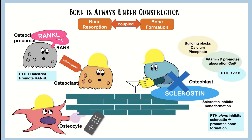PTH can also - when there's enough of it around and the goal isn't necessarily to fix the calcium - inhibit sclerostin at certain doses, and this can promote bone formation. So PTH can take minerals out of bone, but it can also build bone back up. And estrogen inhibits osteoclasts. So now we're going to layer on the drugs.